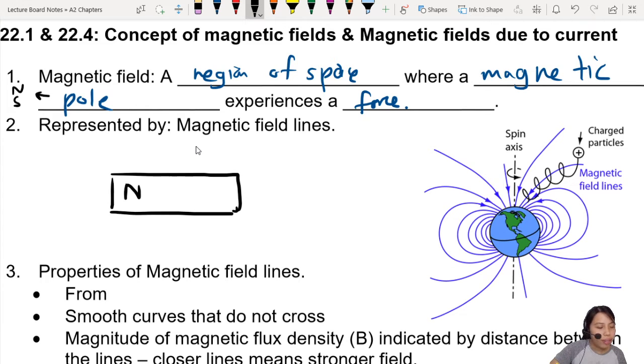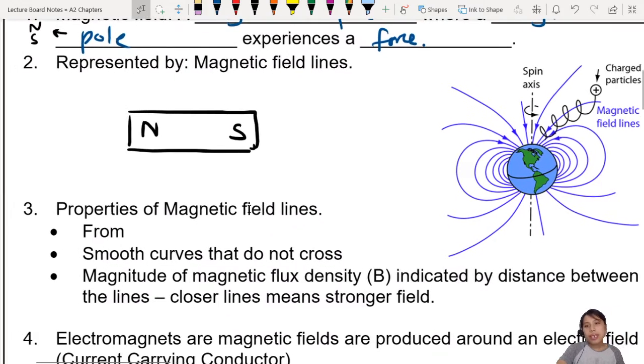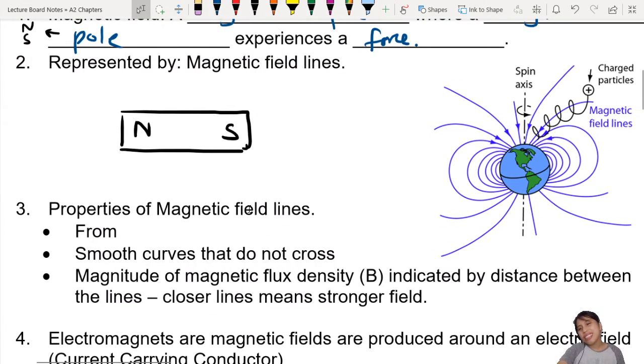One example is our famous bar magnet: north pole, south pole, like this. Remember how it looks like? So when we're drawing magnetic field lines, you need to know several properties. Number one, they're kind of like electric fields but not exactly. So number one, you want to draw from north to south.